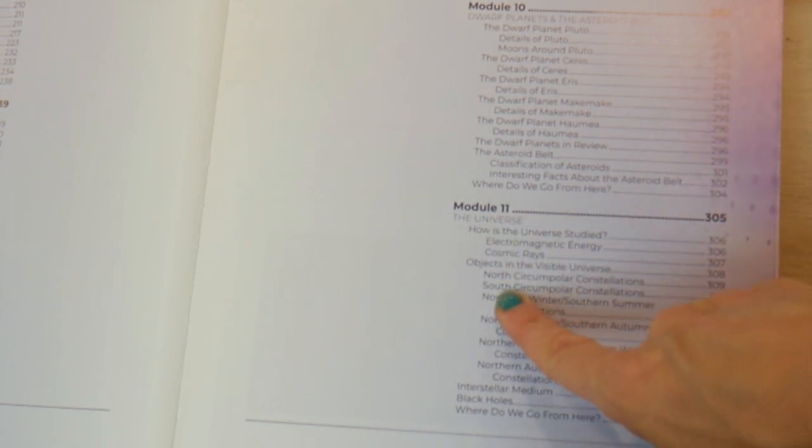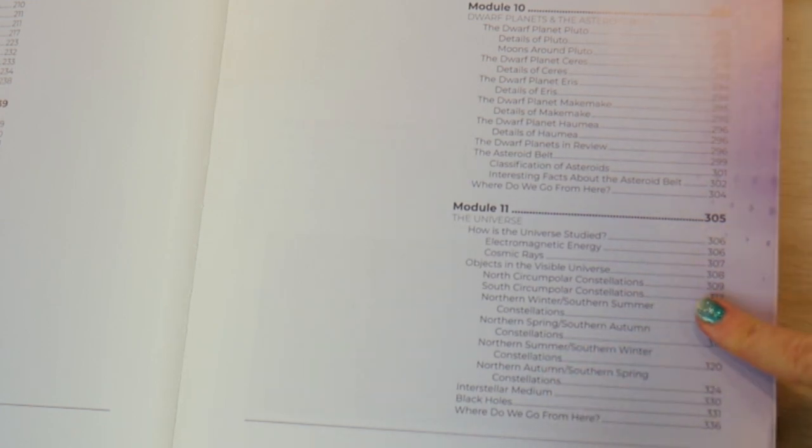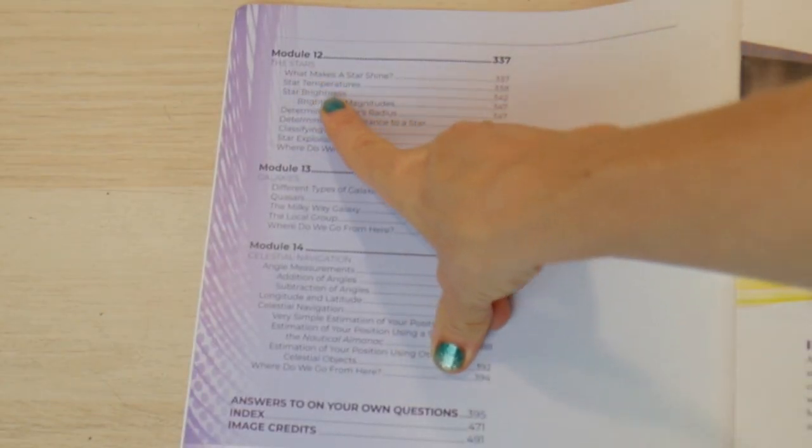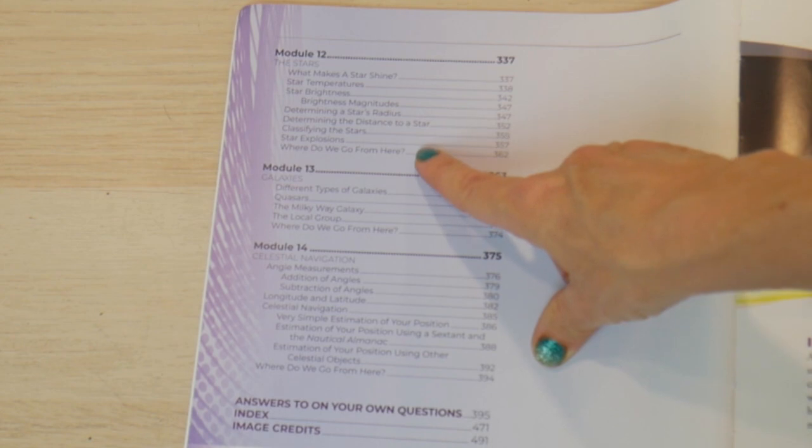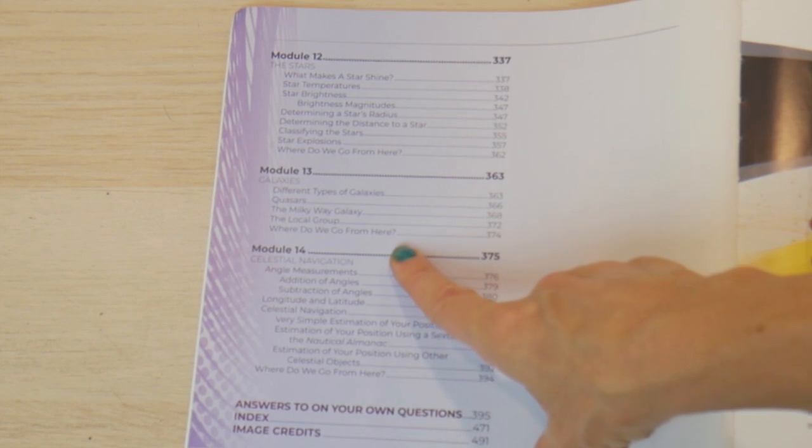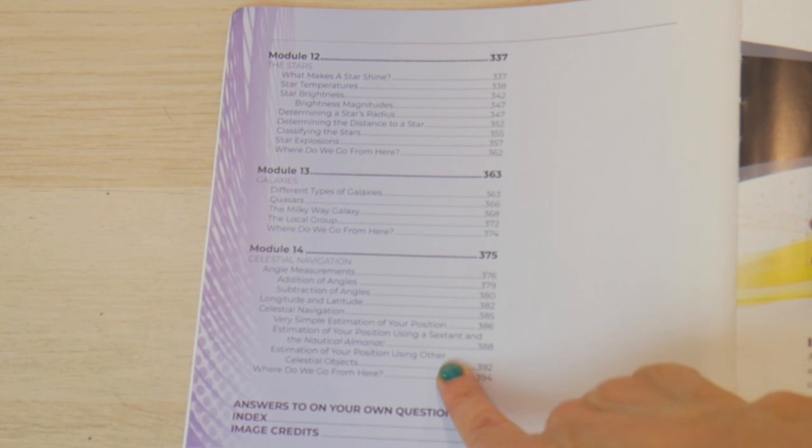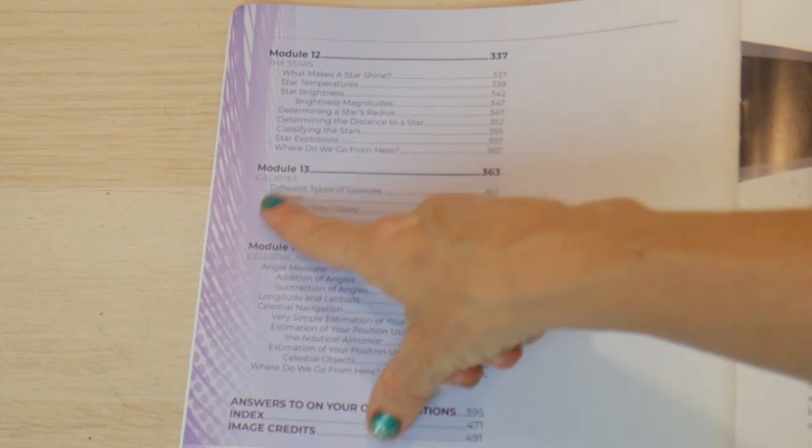In module eleven you're going to get into the universe. You're going to start talking about constellations, northern spring summer southern autumn constellations. It's the constellation chapter and then in the end you're going to start talking about black holes. Module twelve talks about the stars: the age of the stars, the brightness, the classification. Module thirteen is your galaxies, the different types of galaxies. And module fourteen gets into celestial navigation. This is also a lot of math and actually mapping.